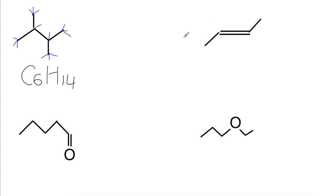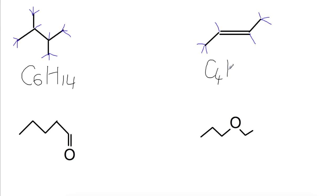For this molecule we have trans-butene. You could put in the hydrogens to count them: at each end of the chain we have three, and one on either side of the double bond, giving us four carbons — C4 — and a total of eight hydrogens, so C4H8.